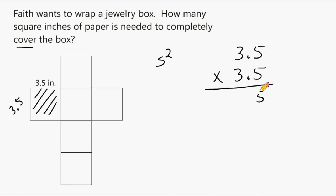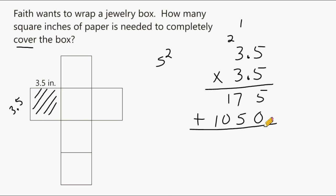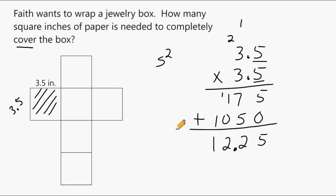So we have 5 times 5 is 25, and 5 times 3 is 15, plus 2 more is 17. We put a 0 here and proceed to multiply with this 3. 3 times 5 is 15, we carry the 1. And 3 times 3 is 9, plus 1 more is 10. Let's add these digits together: we have 5 in this column, 12 in this column, 12 in this column, 2 in this column, and 1 in this column. In the problem we have two decimal points — one place value after each decimal for a total of two place values — so in our answer we go to the end and move left two place values. The area of this individual square is 12.25 square inches.